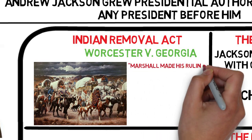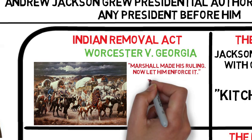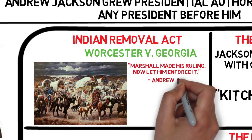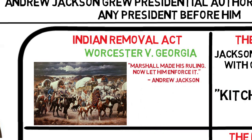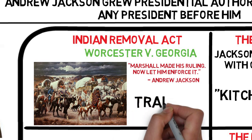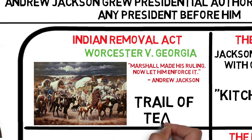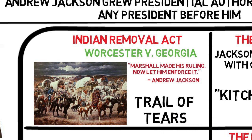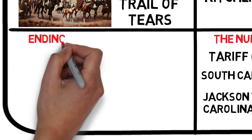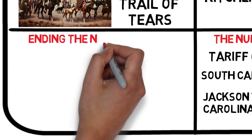Not favoring Marshall's decision, Andrew Jackson simply chose to ignore it. As a result, thousands of Cherokee Indians were forced westward on what is known as the Trail of Tears. On this forced migration, over 2,000 Cherokee Indians died as a result of exposure and starvation.